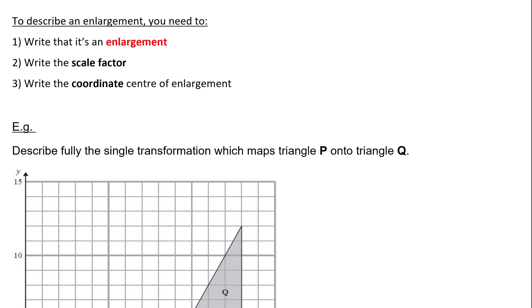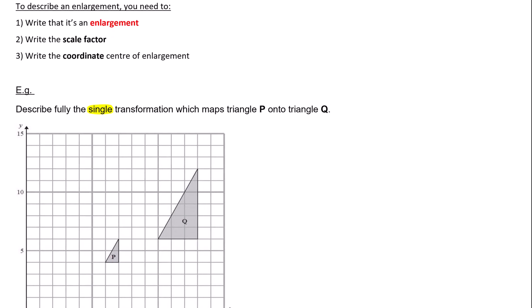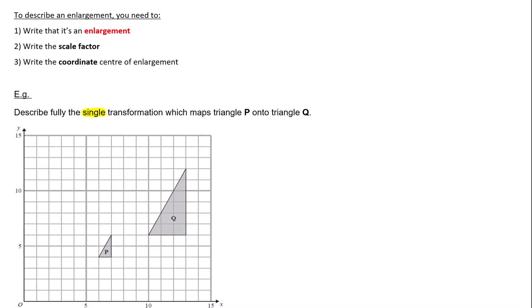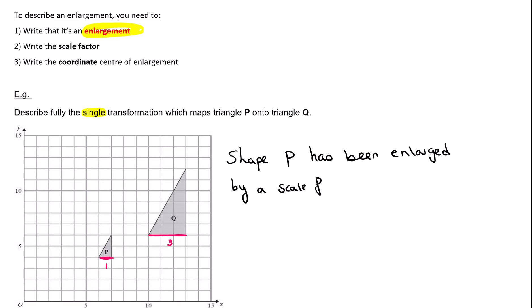They could also ask you to describe the transformation. They'll say 'describe fully the single transformation which maps one shape to the other.' In this example, shape P (the smaller one) maps to the bigger one, so it's an enlargement. First, state the transformation: shape P has been enlarged. Second, state the scale factor — comparing the base: 1 square to 3 squares, so the scale factor is 3.